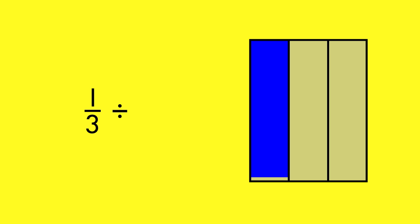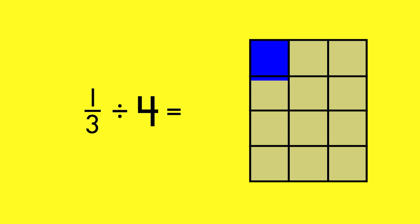When you divide a unit fraction such as one-third by a whole number such as four, you are dividing one part of a whole into even smaller parts. Each third gets divided into four parts. Make sure to divide all the parts into fourths so that the whole now has twelve parts. One of these parts is one-twelfth of the whole. One-third divided by four equals one-twelfth.